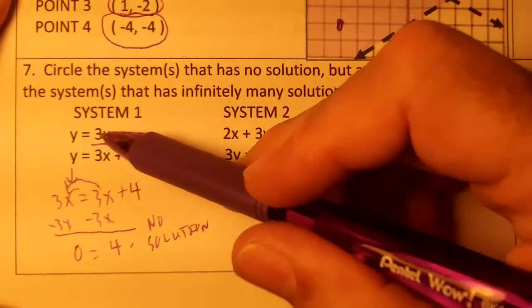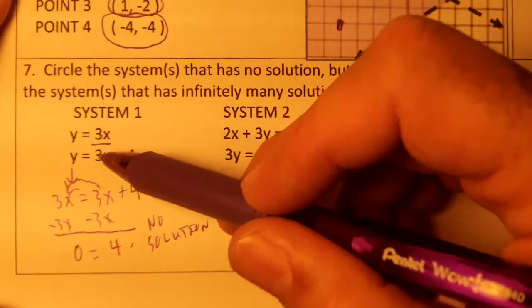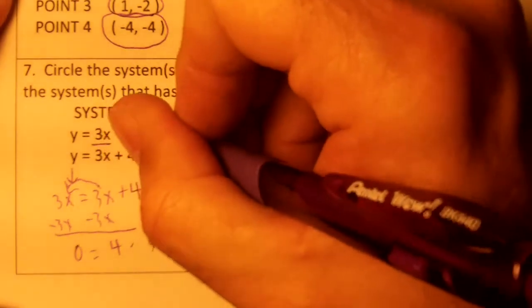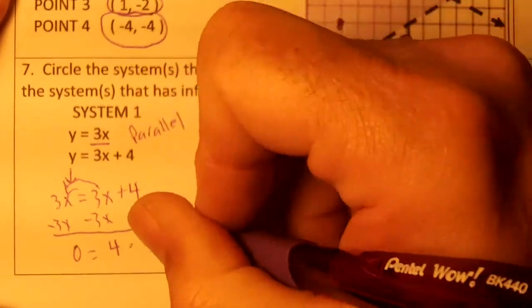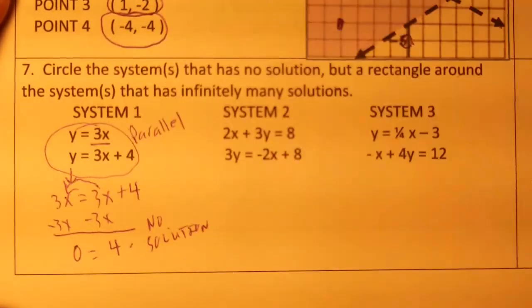You can also look, the growing numbers are the same, but the starting numbers aren't, or the slopes are the same. If the slopes are the same and the starting numbers aren't, the lines are parallel. So it has no solution. If it has no solution, we're going to circle it. So we'll circle the system.